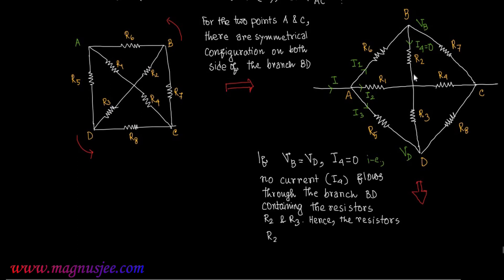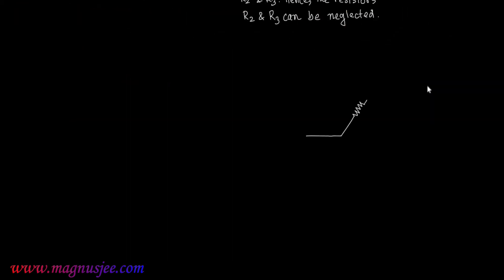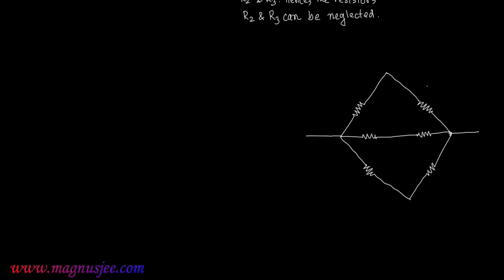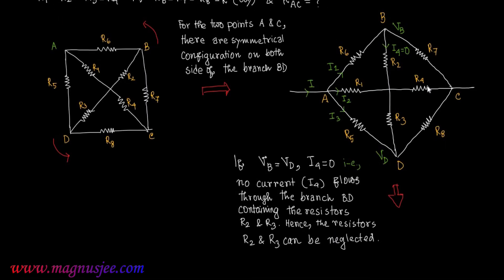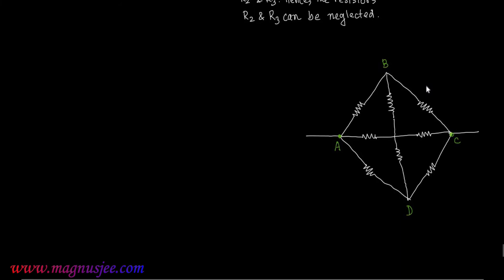Since no current flows through branch BD, the resistors R2 and R3 in that branch can be neglected. After neglecting R2 and R3, we get a circuit in which there are three branches connected in parallel combination between the two points A and C. The branch BD containing R2 and R3 is removed.